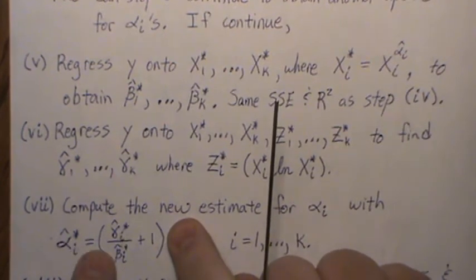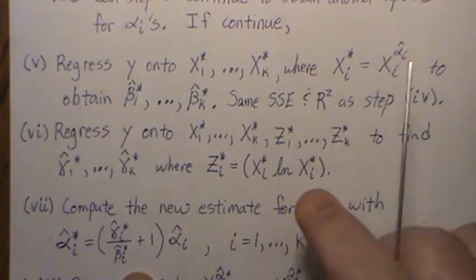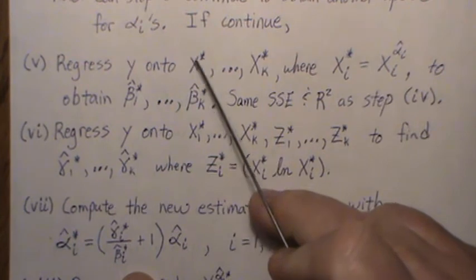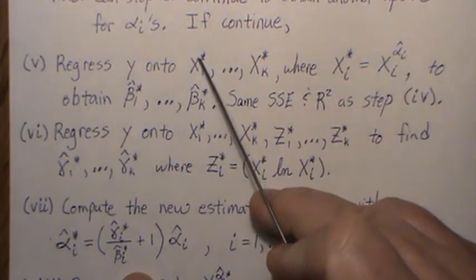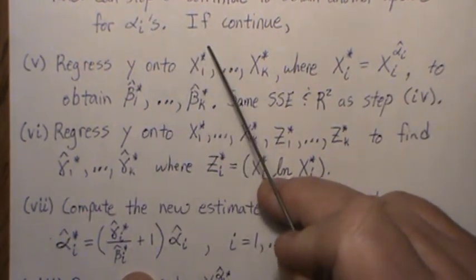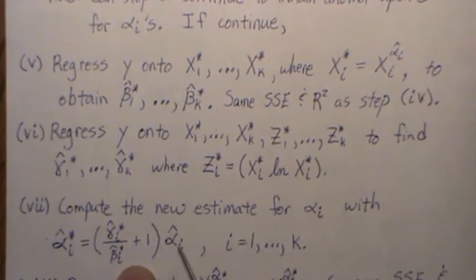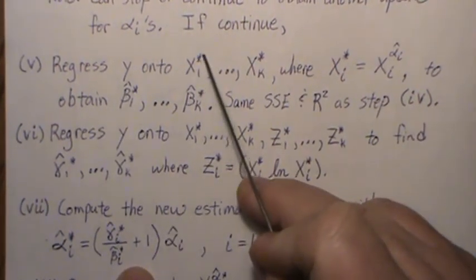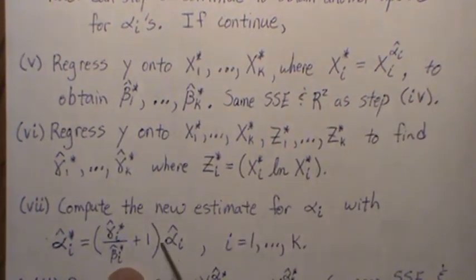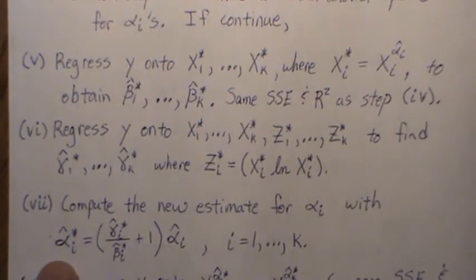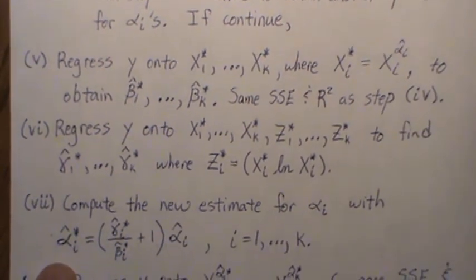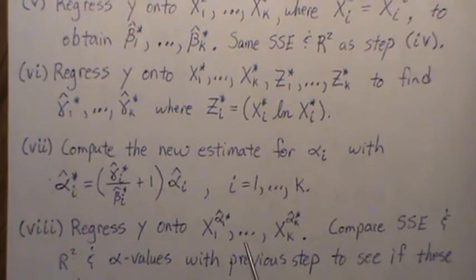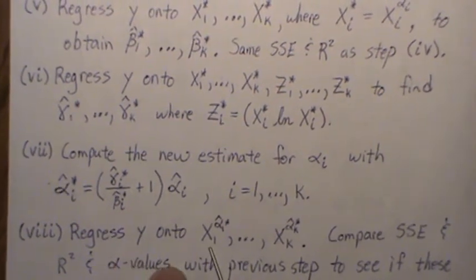Right, so in step one we would leave this off and this is our estimate for the alpha. But remember these X's are raised to a power and we're finding an estimate for a new power. So then to find the updated, you have to take the product of those. So this is the new estimate for alpha.